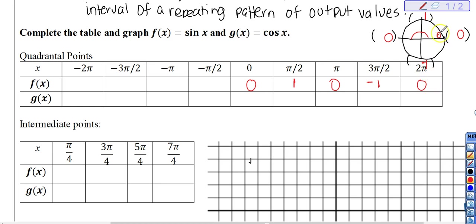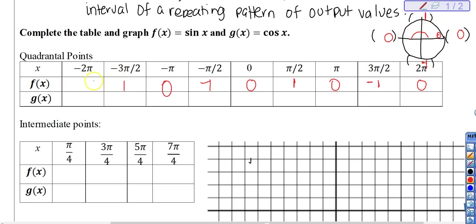Now let's rotate backwards — the negative rotation. Starting at zero and rotating backwards: negative one, zero, one, zero, and it just goes over and over again: zero, one, zero, negative one, repeating indefinitely in both directions.